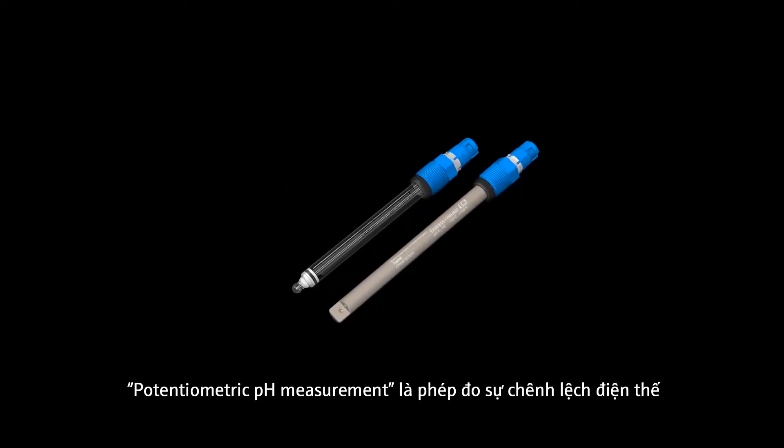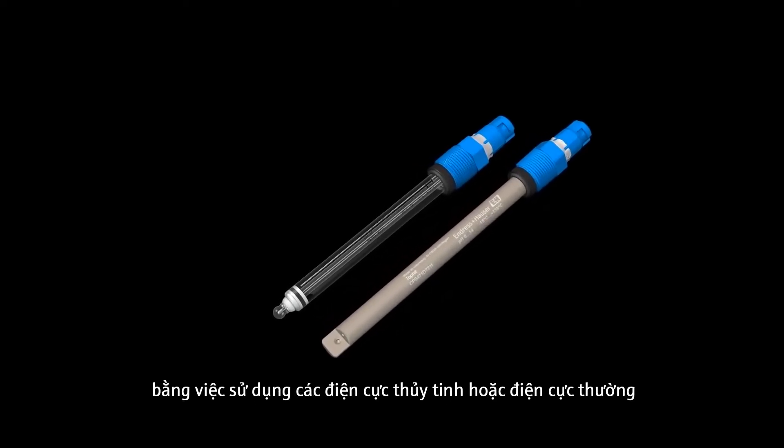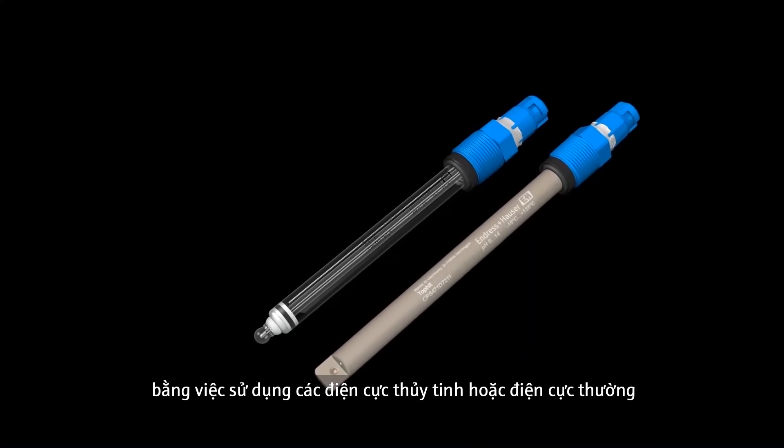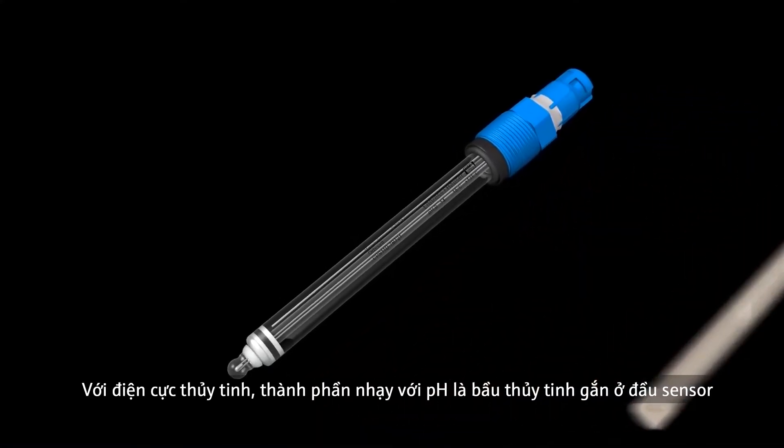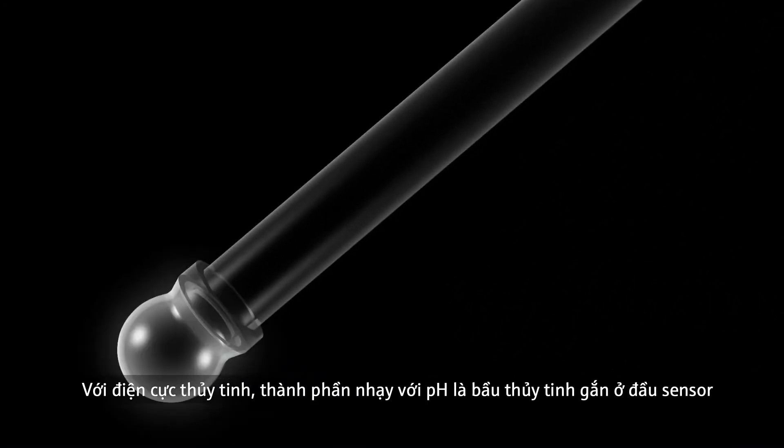Potentiometric pH measurement is the measurement of a potential difference using so-called glass electrodes or non-glass electrodes. In the case of glass electrodes, the pH sensitive element is a glass bulb that is fused to the end of a glass tube.